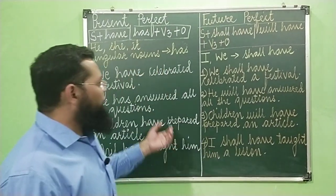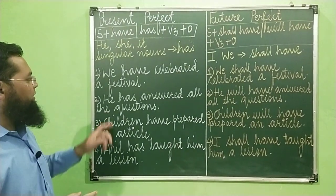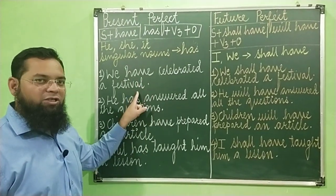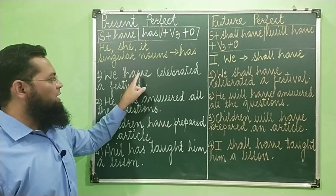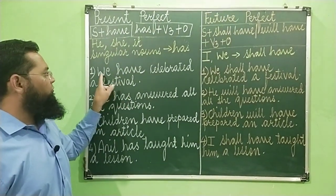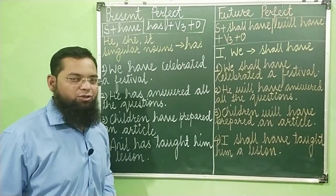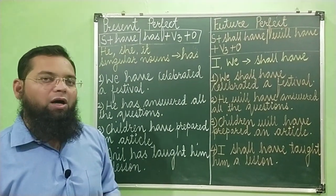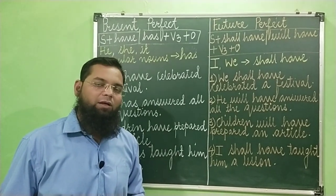So these are few examples of present perfect tense. The first one: 'We have celebrated a festival.' Subject is 'we', helping verb is 'have', 'celebrated' is verb in third form, 'a festival' is object. Iska translation: hum ne ek tyohaar celebrate kar chuke hain — present mein kaam pura ho gaya.